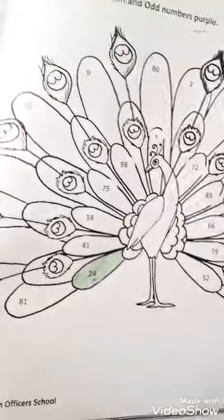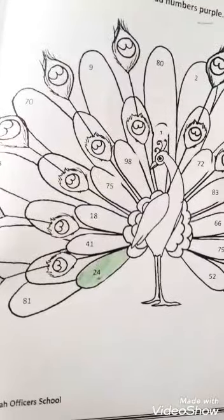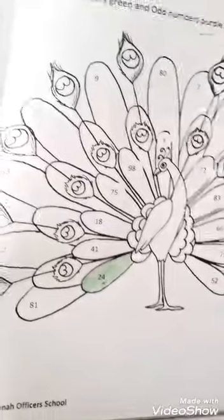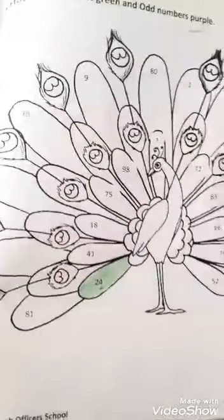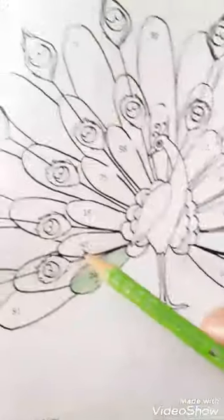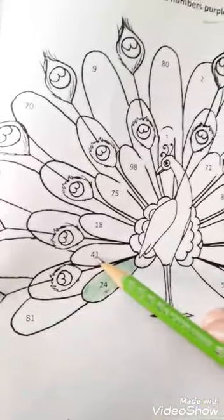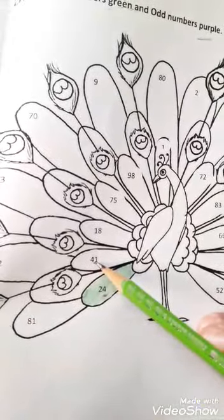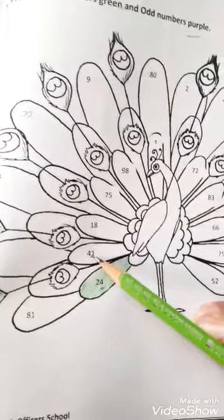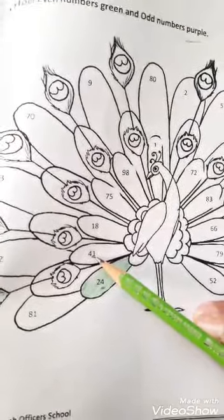In next number, number is 41. We will check the ones place. In 41, the ones place is 1. 1 is an odd number or an even number? Yes, 1 is an odd number. So we will color it purple.